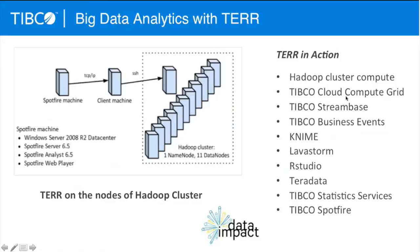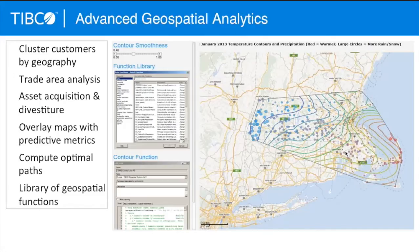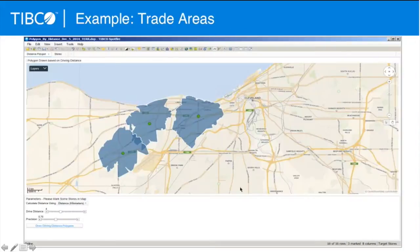TAIR runs on the TIBCO Cloud Compute Grid, inside TIBCO Event Processing products. It's embedded in NIME, LavaStorm, and RStudio. It runs in Teradata, Stat Services, and Spotfire — it's really becoming embedded in a number of different places. When you combine this with geospatial analysis, we can put advanced analytics on top of maps, and Ian's going to take you through examples of that. You can do things like trade areas — what's the drive time or drive distance around an individual store, who lives in that area, and how you might market to them to bring them into those stores.